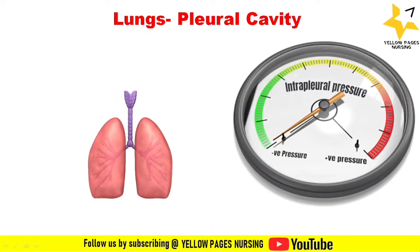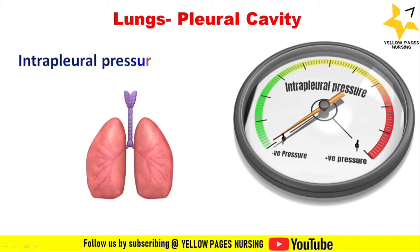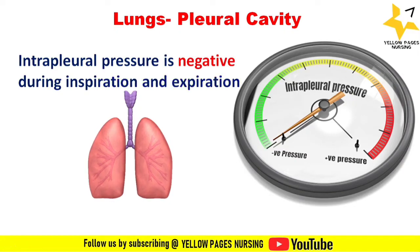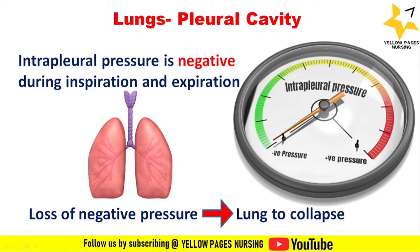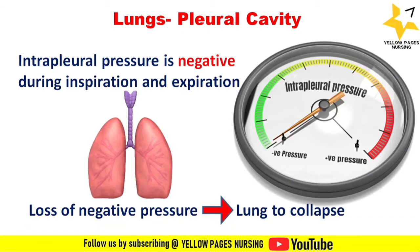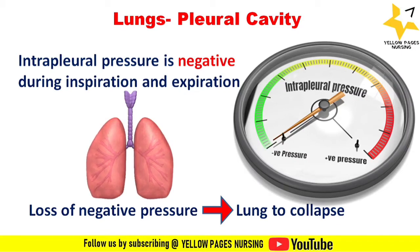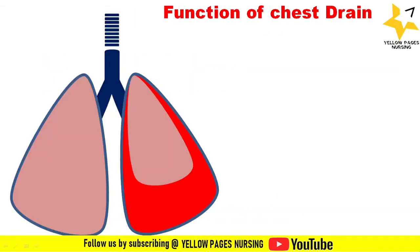This elasticity creates negative pressure which causes the lungs to inflate. Intrapleural pressure is always negative and it varies during inspiration and expiration. When this negative pressure is lost, it causes the lungs to collapse, and hence a chest drain will be needed in order to restore the correct pressures.